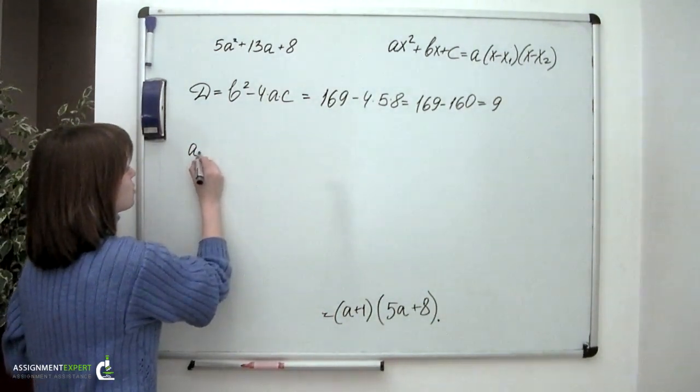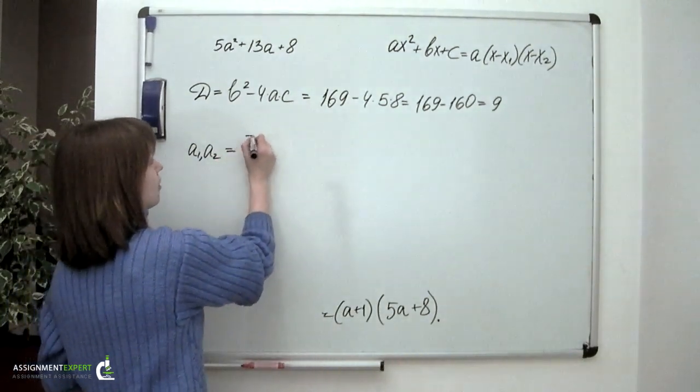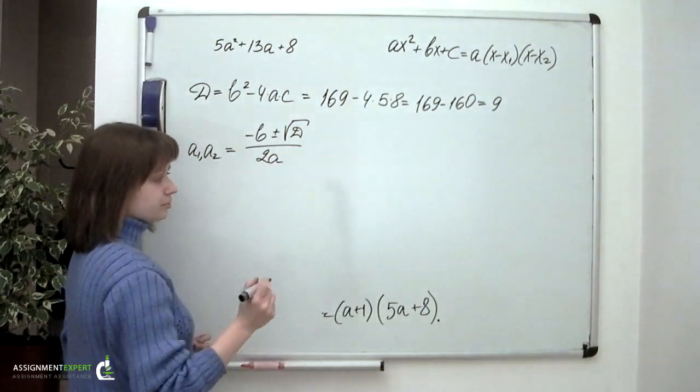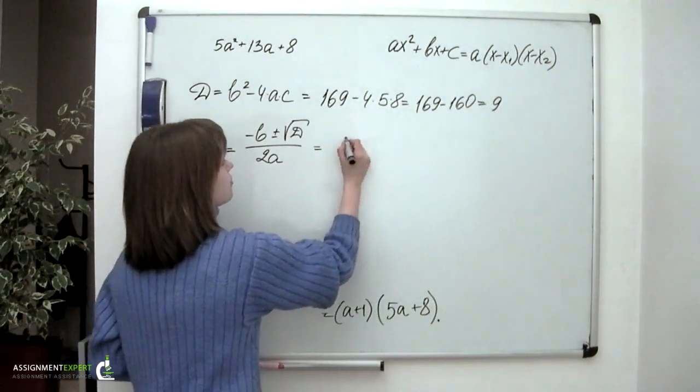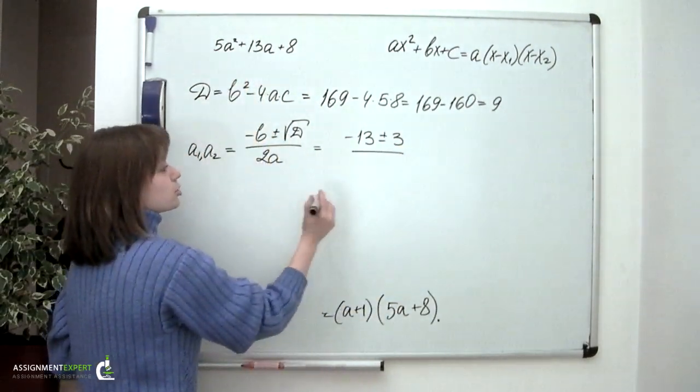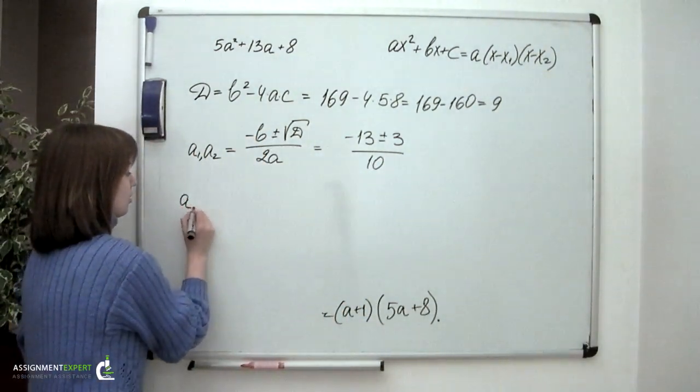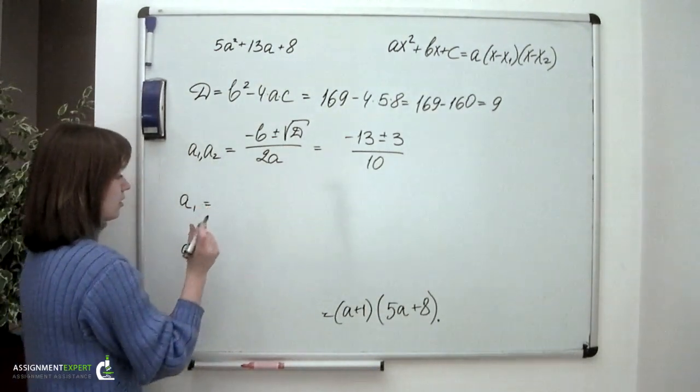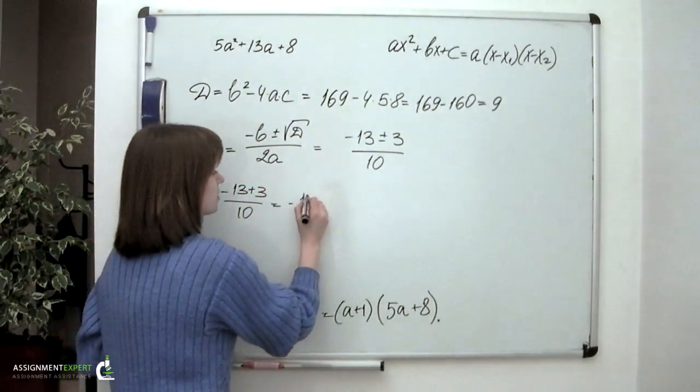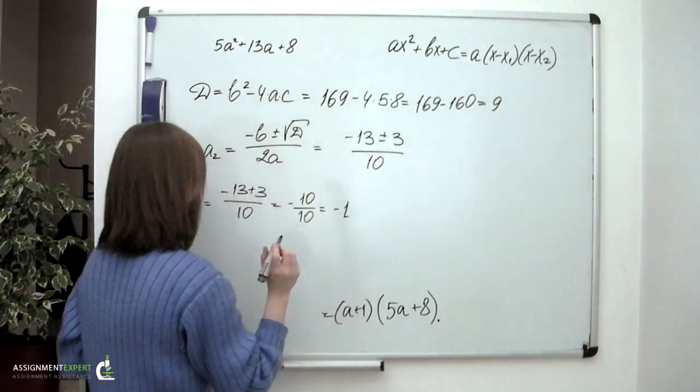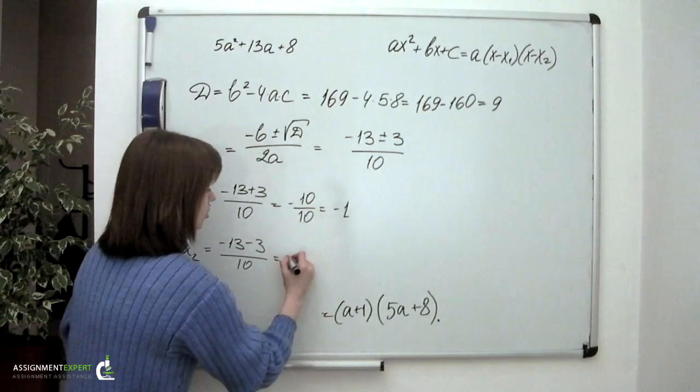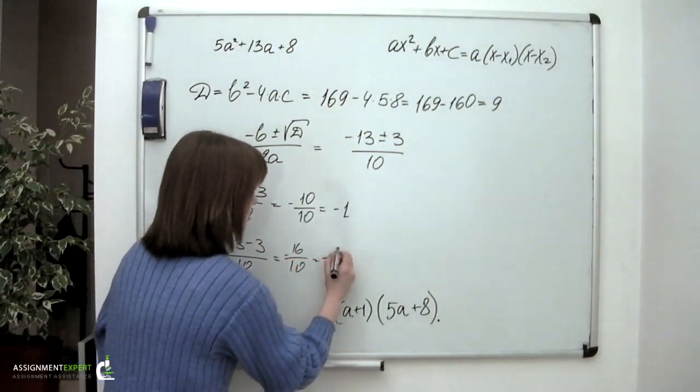Then we are finding the roots of this polynomial. Negative b plus or minus square root of the discriminant divided by 2 times a. Or substituting the values into the formula. We'll have negative 13 plus or minus square root of 9 which is 3 over 2 times 5 which is 10. So let's now write them separately. The first a goes negative 13 plus 3 over 10 which is negative 10 over 10 which is negative 1. A2 equals negative 13 minus 3 over 10 which is negative 8 over 5.